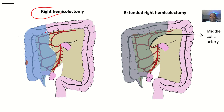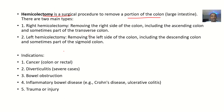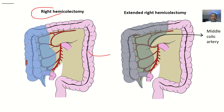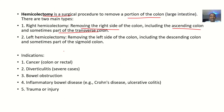The right hemicolectomy means you are removing the right part of the colon, including the ascending colon and sometimes part of the transverse colon. For the left hemicolectomy, you are removing the left side of the colon — that's the descending colon, and sometimes part of the sigmoid colon.